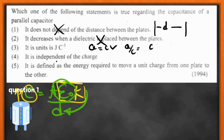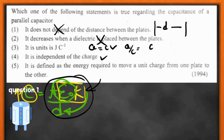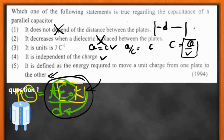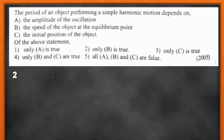The fourth option says capacitance is independent of the charge — this is correct. You can see there is no charge term in the equation C = A·ε₀/d. The fifth option defines capacitance as the energy required to move a unit charge from one plate to another, which is incorrect — C is defined as Q/V, coulombs per volt, not energy. So the correct answer is that capacitance is independent of charge. If you know the equation, it's easy to get the answer.